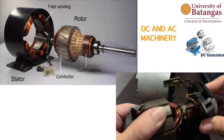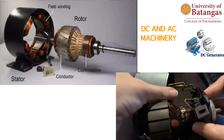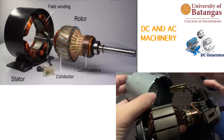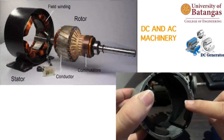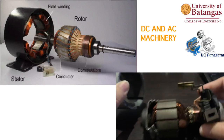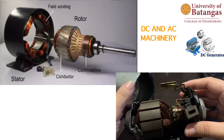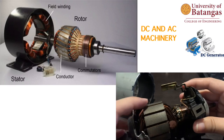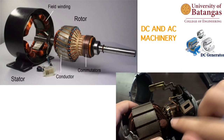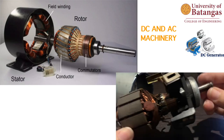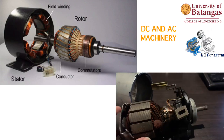The rotating part is known as the rotor. In the stator you have the yoke, the poles, and the brushes. In the rotor you have the armature, conductors, commutator, and shaft.